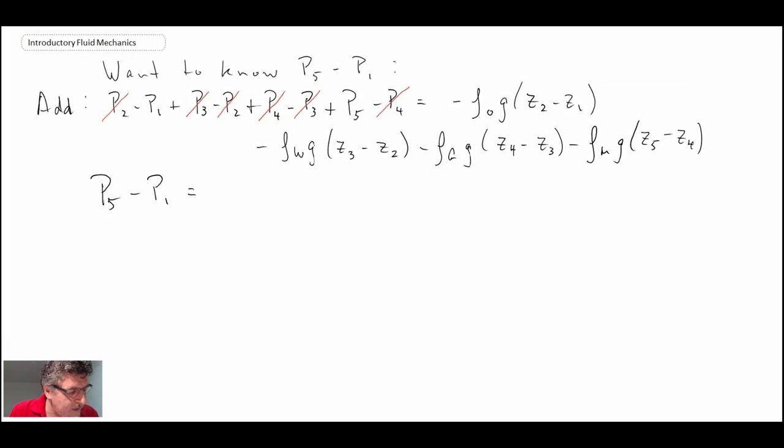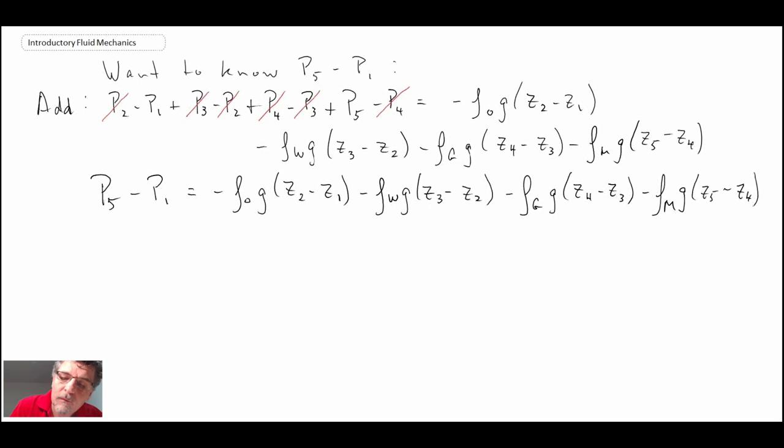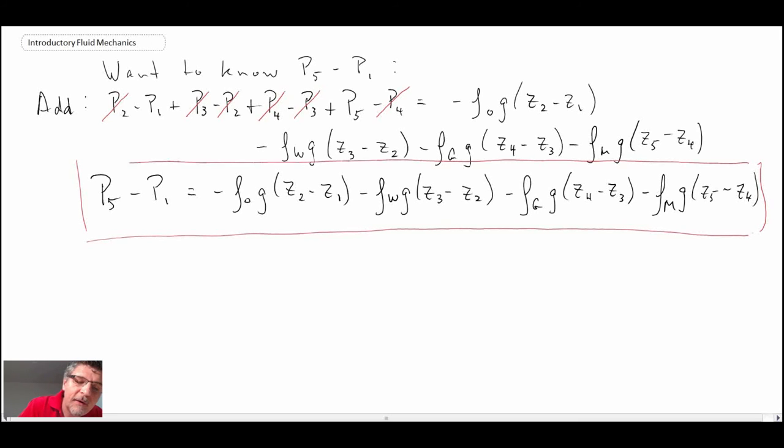For the right hand side, what I will do is I will express it out. There's no way to cancel out the terms. So we'll just explicitly write it all out. This would then enable us to determine the pressure at five, knowing the pressure at one on the surface.